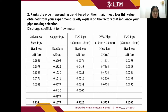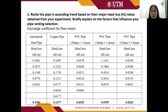The next discussion is to rank the pipes in ascending order based on their major head loss values obtained from the experiment. Based on the calculations, the head loss of the galvanized steel pipe is 0.1540, the copper pipe is 0.1377, the PVC pipe 20 mm × 1.5 mm is 0.0325, the PVC pipe 16 mm × 1.8 mm is 0.5555, and the PVC pipe 32 mm × 1.9 mm is 0.0265.